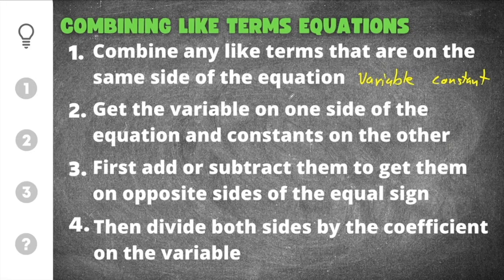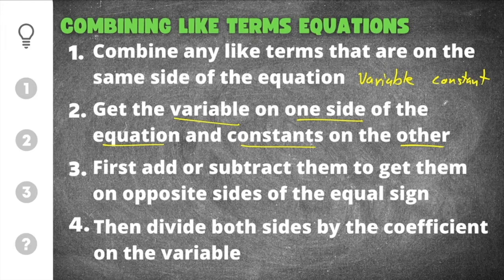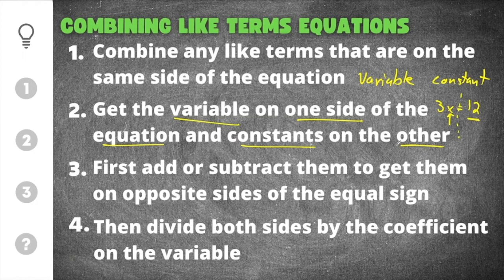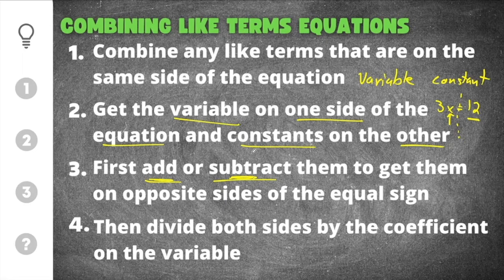After you combine like terms, the next thing you're going to do is get the variable on one side of the equation and a number or constant on the other — something like 3x equals 12. You'll want the variable on one side of the equal sign and a constant on the other. To do that, you need to add or subtract constants or variables to get them on opposite sides of the equal sign.